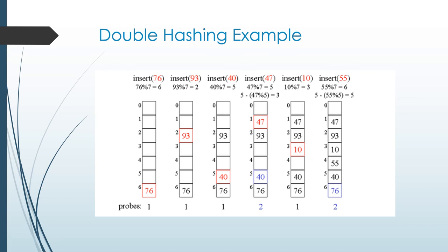Insert 47: 47 mod 7 equal to 5. Already 40 is placed at key value 5. So by using the second formula, the smaller prime number is 5: 5 − (47 mod 5) equal to 3. So 47 should be placed after 3 positions from key value 5, meaning 47 is placed at key value 1. Next, insert 10: 10 mod 7 equal to 3, so 10 is placed at key value 3. Insert 55: 55 mod 7 equal to 6. Already 76 is placed there, so using the formula, 55 should be placed after 5 positions from key value 6, so 55 is placed at key value 4. This is about double hashing.